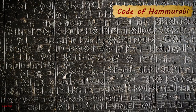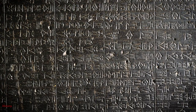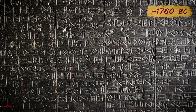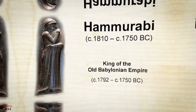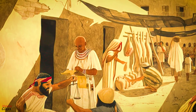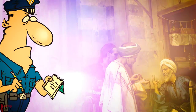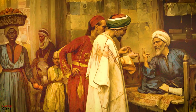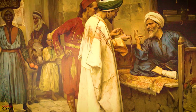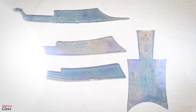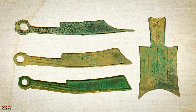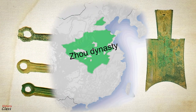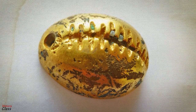The Code of Hammurabi, the best preserved ancient law code, created around 1760 BC and enacted by the 6th Babylonian king Hammurabi, formalized the role of money in civil society. Fines and monetary compensation were set for various violations of the law. From about 1000 BC, money in the form of small knives and spades made of bronze was in use in China during the Zhou dynasty, with cast bronze replicas of cowry shells in use before this.